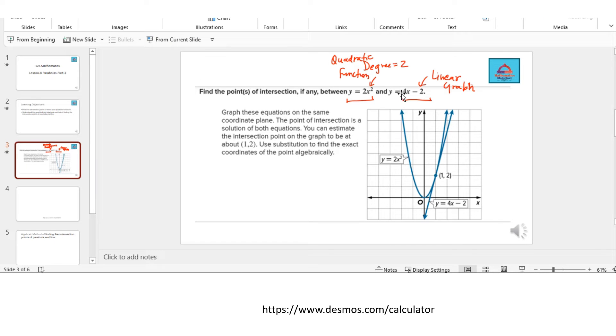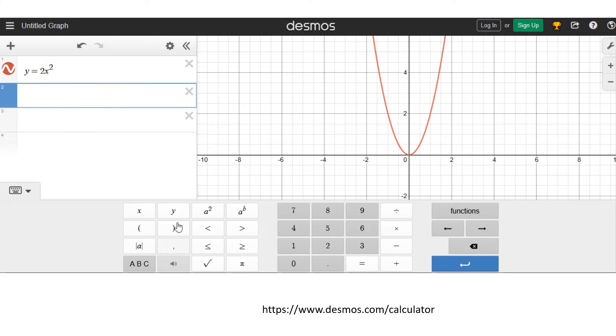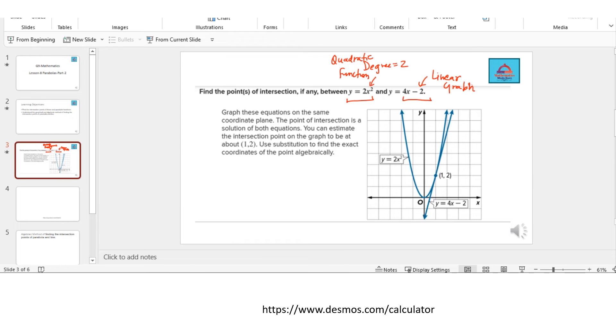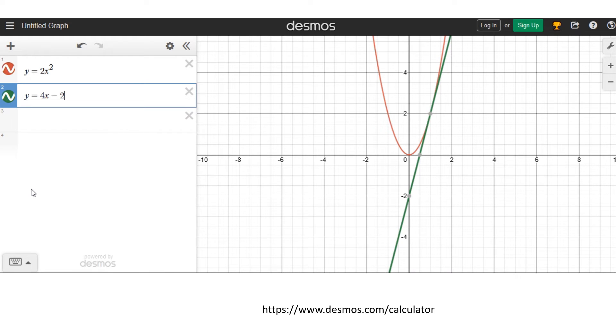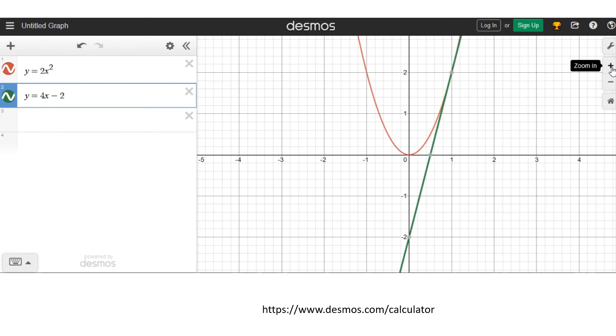The second one is the linear graph of the line y equals 4x minus 2. So y equals 4x minus 2. I hope you all can see—I'm going to close the keypad. The red parabola upward and the green line. Let's zoom it a little bit further and then mark the points of intersection.